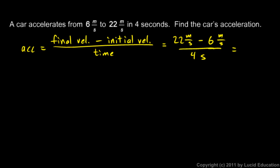Now 22 minus 6 is 16. So 22 meters per second minus 6 meters per second is 16 meters per second and we're dividing that by 4 seconds. Now 16 divided by 4, that obviously simplifies to 4. And here we have meters per second divided by seconds. So we have 4 meters per second divided by seconds.